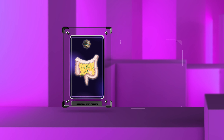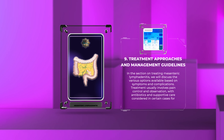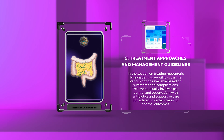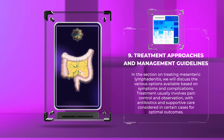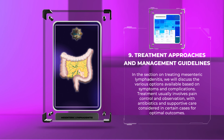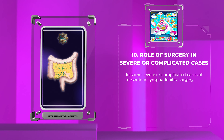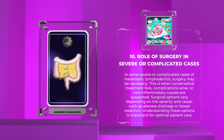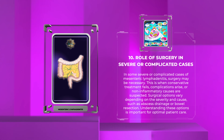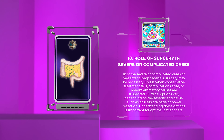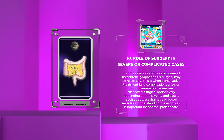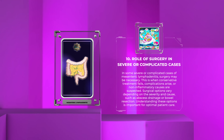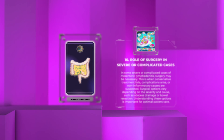In the section on treating mesenteric lymphadenitis, we will discuss the various options available based on symptoms and complications. Treatment usually involves pain control and observation, with antibiotics and supportive care considered in certain cases for optimal outcomes. In some severe or complicated cases, surgery may be necessary — when conservative treatment fails, complications arise, or non-inflammatory causes are suspected. Surgical options vary depending on the severity and cause, such as abscess drainage or bowel resection.